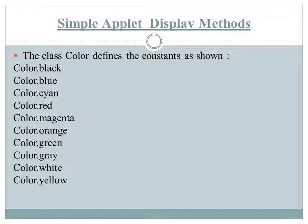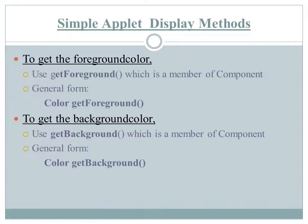We can use any of the color constants as arguments to setBackground or setForeground. If you want to retrieve the current foreground or background color of the applet window, we can use the methods getBackground and getForeground. Both these methods are members of the Component class.